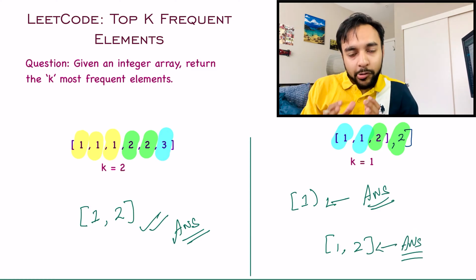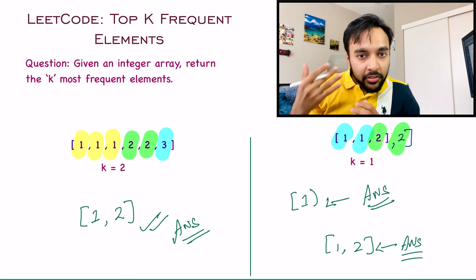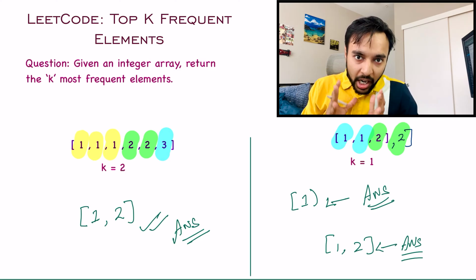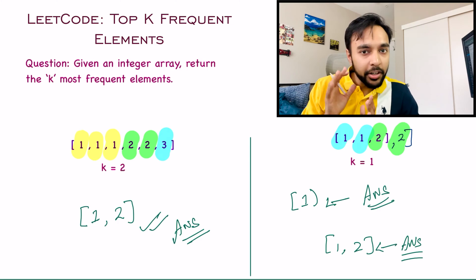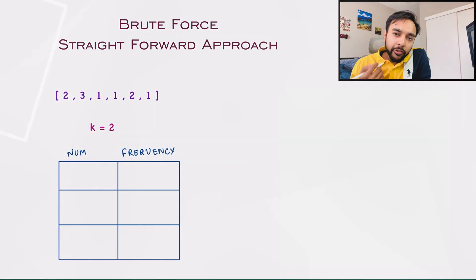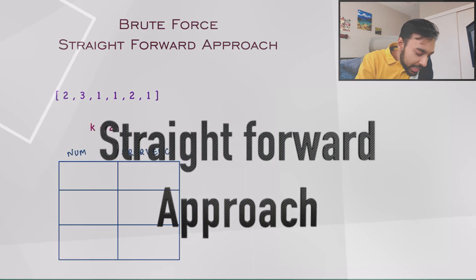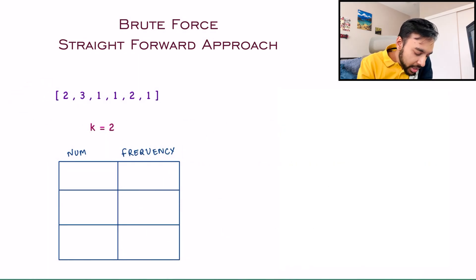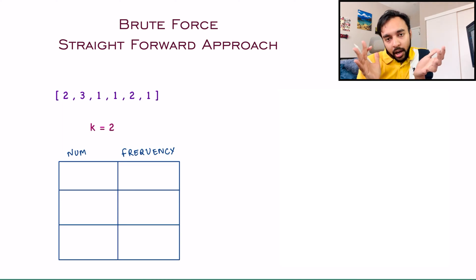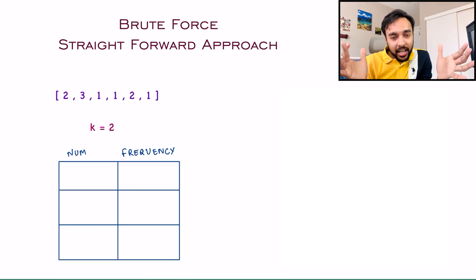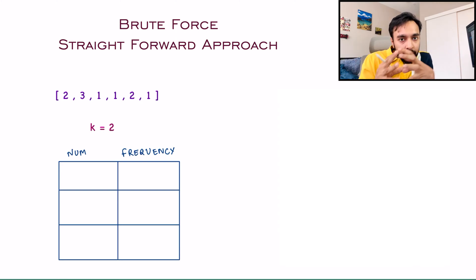Now if you feel you have understood the problem statement, feel free to try it out on your own. Otherwise, let us dive into the solution. When you begin to solve this problem, let's say I have this sample test case and the value of k is two. What is the first intuition that comes to mind? Somehow you need to maintain how many times a particular element is occurring.